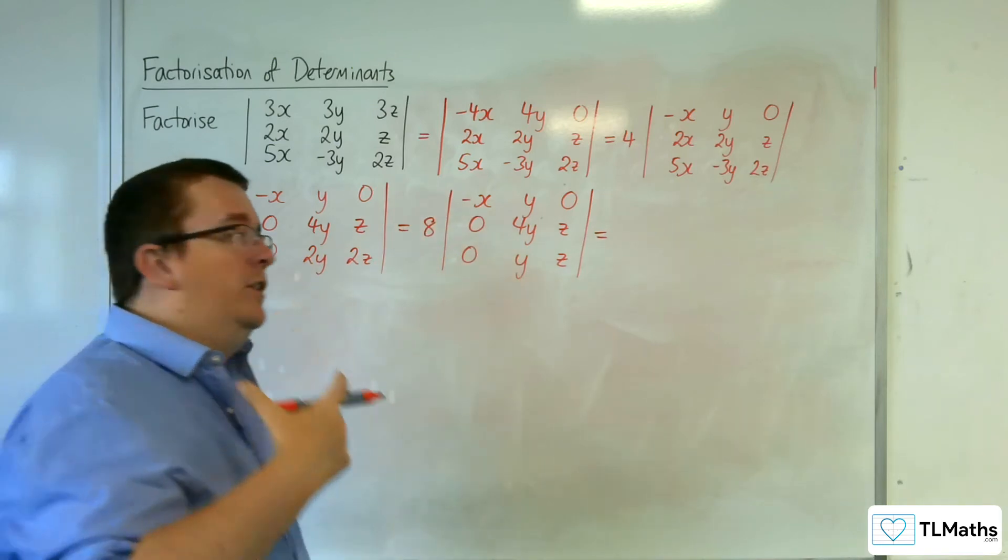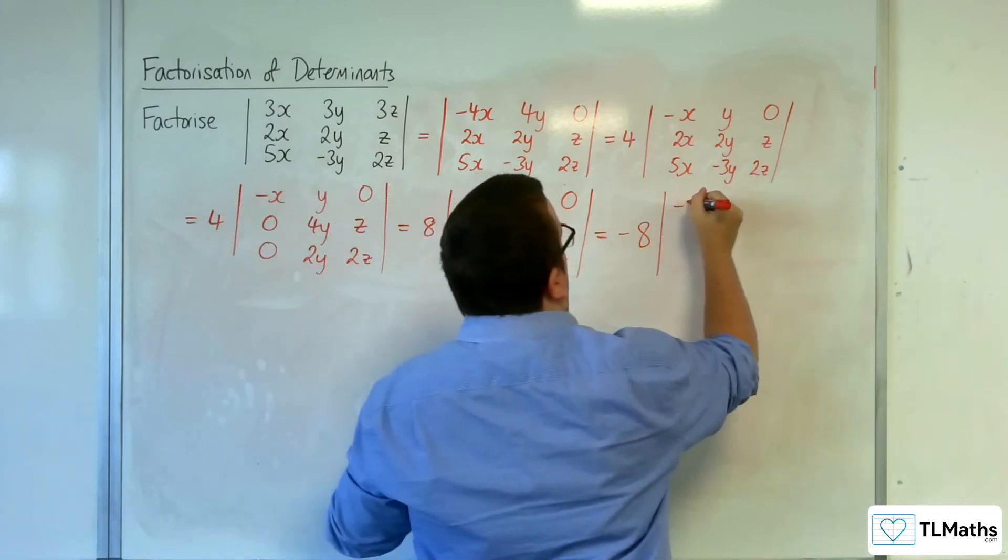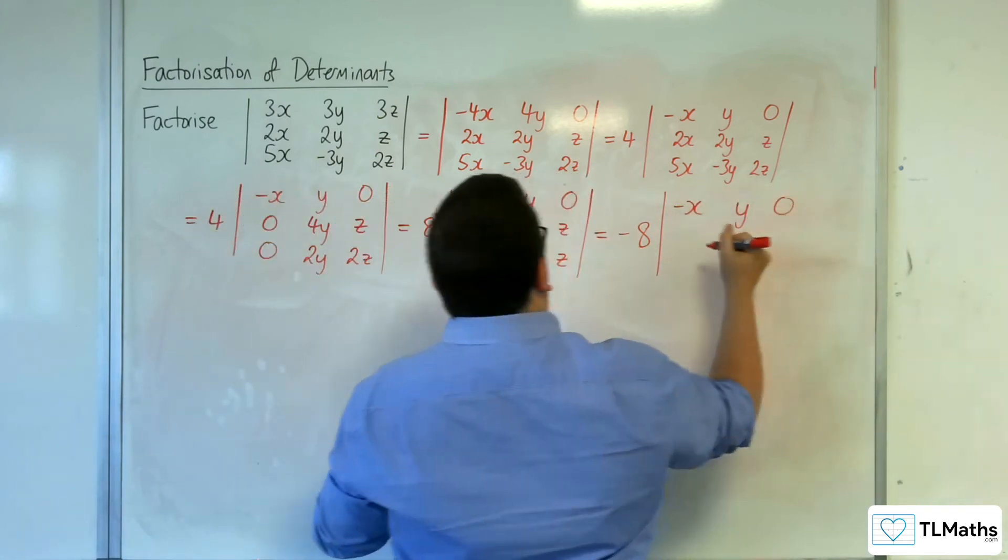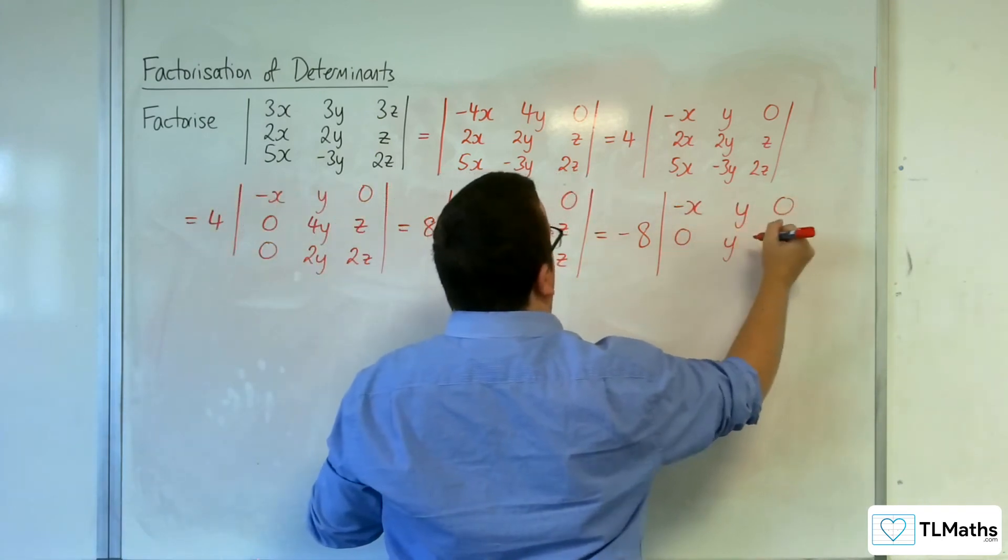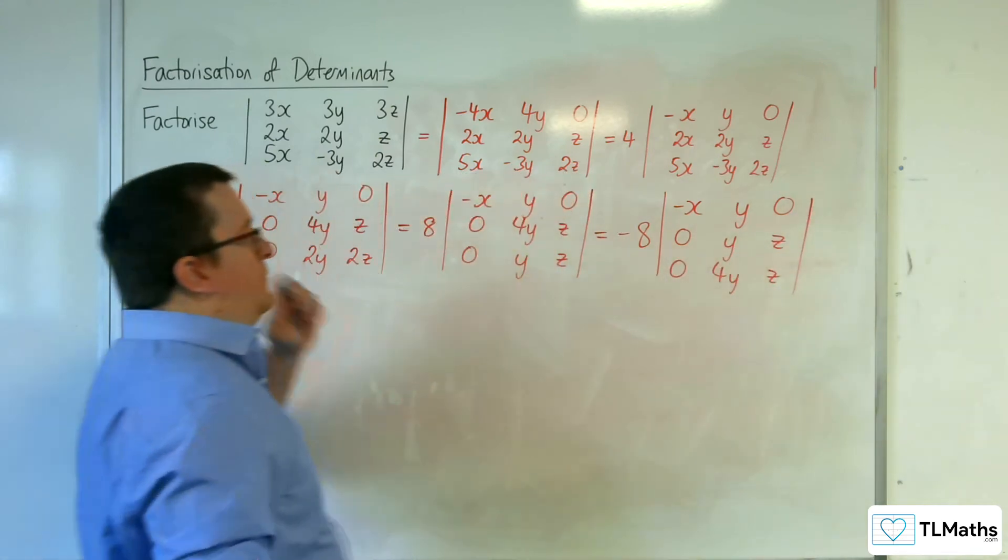Now when you do that, that's going to cause a minus sign, so bring a minus sign outside when you swap two rows or columns. So I'm going 0, y, z, then 0, 4y, z.